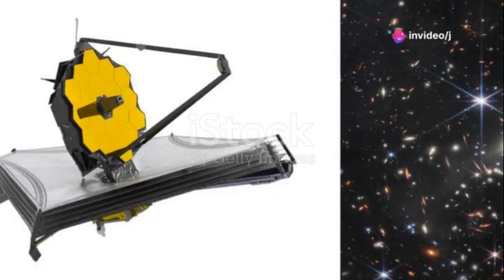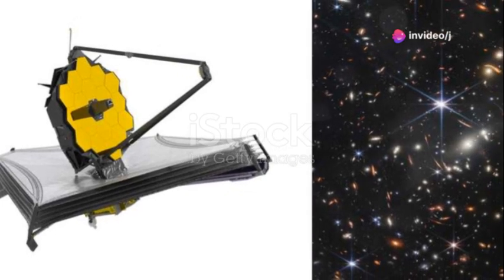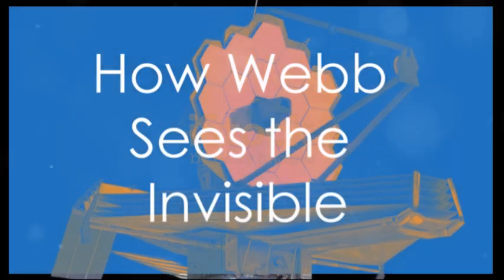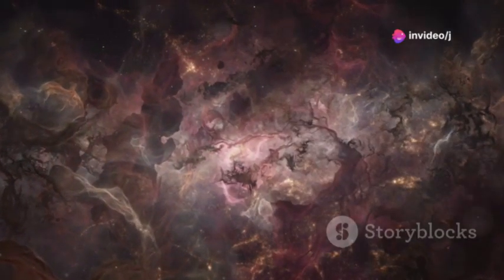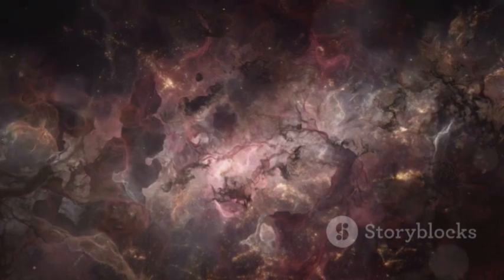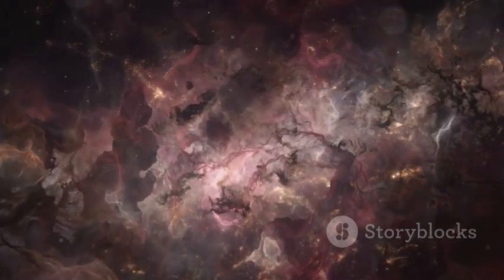And it's already changing everything, revolutionizing our understanding of the cosmos and inspiring a new generation of explorers. What's Webb's secret to seeing the unseen? It sees in infrared light, a form of heat radiation that remains invisible to our eyes, yet reveals so much more. Most of the universe is shrouded in clouds of dust that block visible light, but infrared light can slip right through, unveiling hidden wonders.